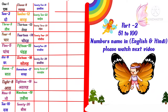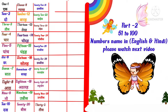T-W-E-N-T-Y E-I-G-H-T, 28 means twenty-eight. T-W-E-N-T-Y N-I-N-E, 29 means twenty-nine. T-H-I-R-T-Y, 30 means thirty.